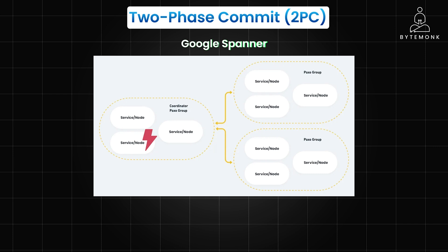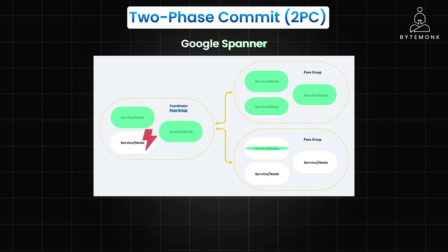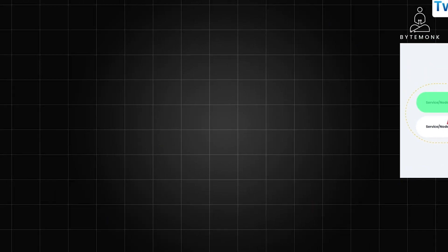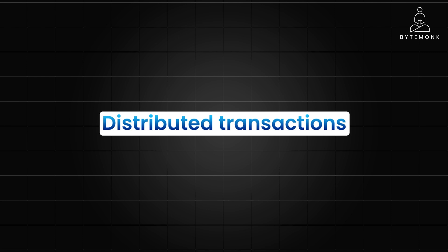Google Spanner, for example, mitigates this drawback by having each member be a Paxos group, thus ensuring that each 2PC member is highly available even if some of its Paxos participants are down. Data is divided into groups that form the basic unit of placement and replication. Going back to our initial discussion on distributed transactions and distributed systems where data is spread across multiple services, ensuring consistency is a critical challenge.